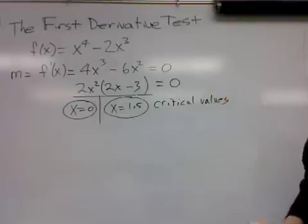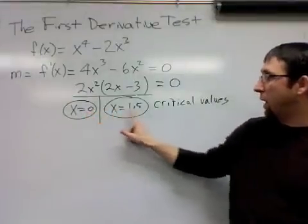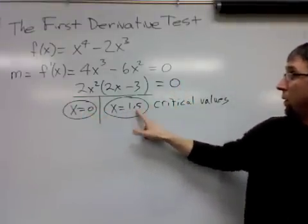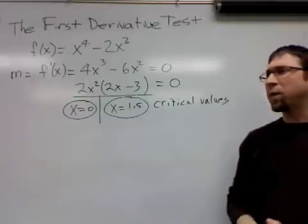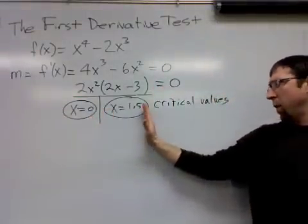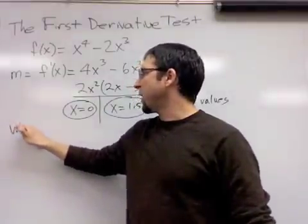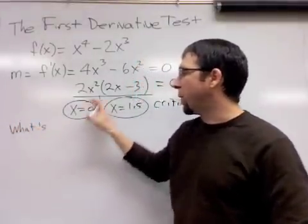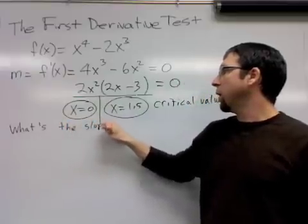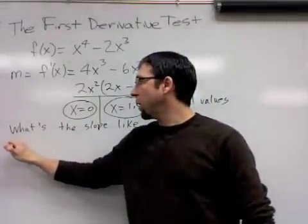From there, we want to look at the slope of the curve. We already know the slope of the curve at zero and at 1.5. The slope will be zero. The slope is zero at zero, and the slope is zero at 1.5. But what about these other areas? What about to the left of zero? What about in between zero and 1.5? And what about to the right of 1.5? What's the slope like? So that's a question that we're going to be asking ourselves over and over again when we do the first derivative test: what's the slope like for the other numbers?